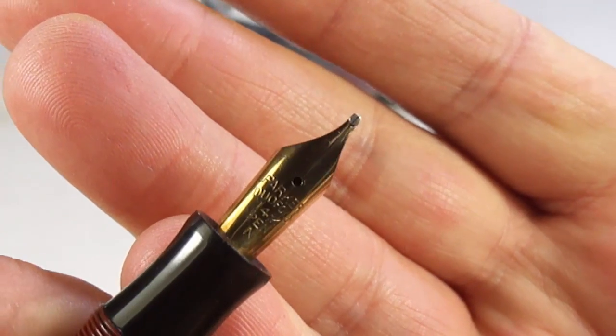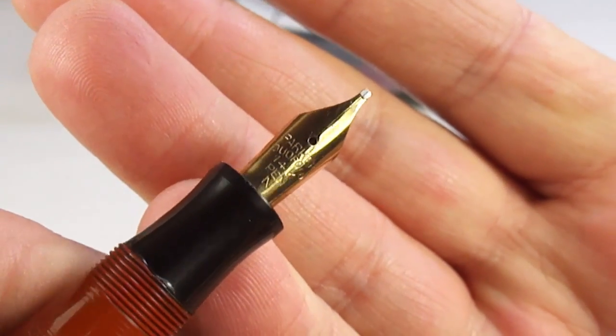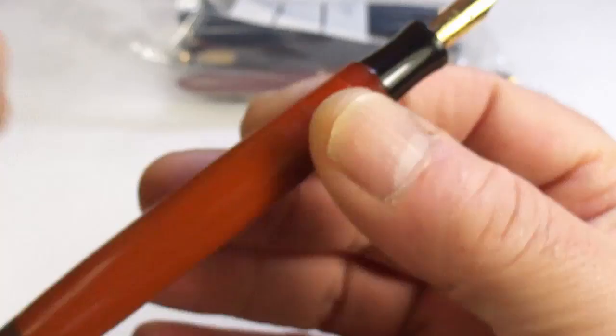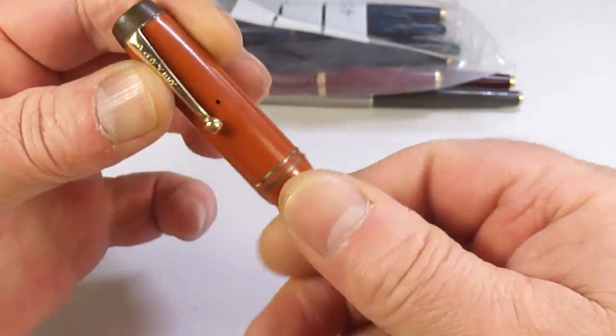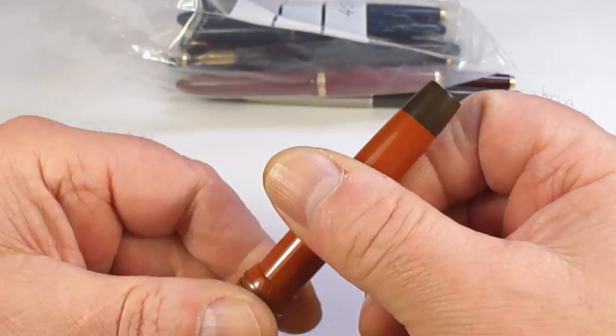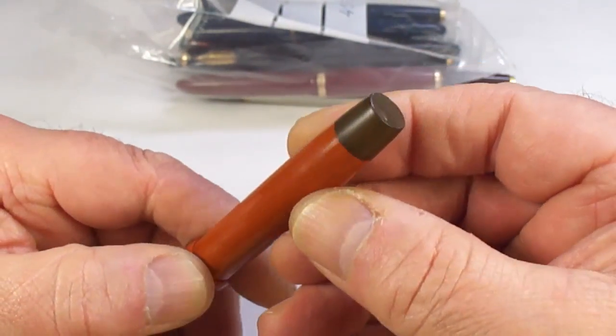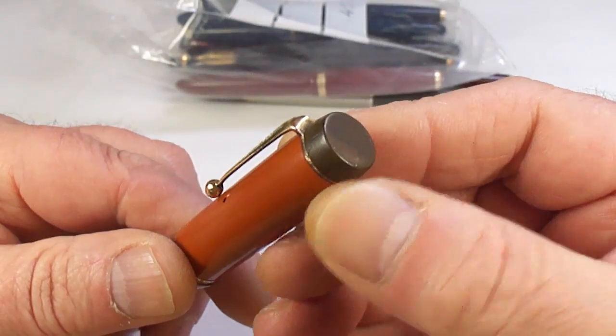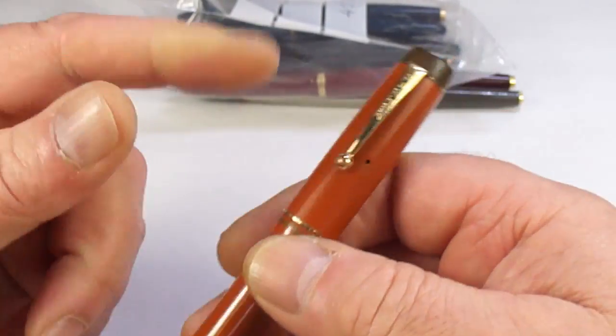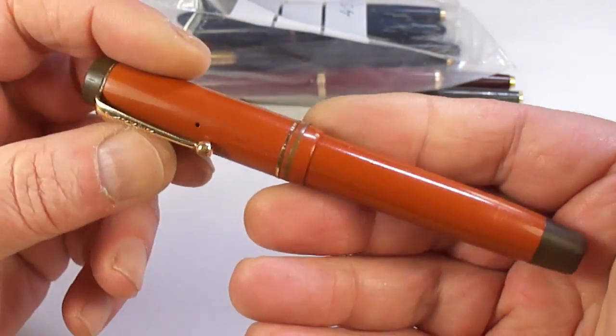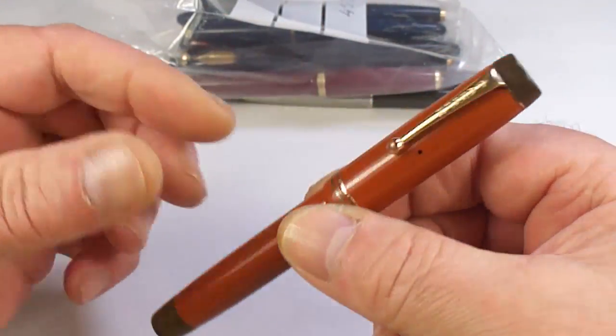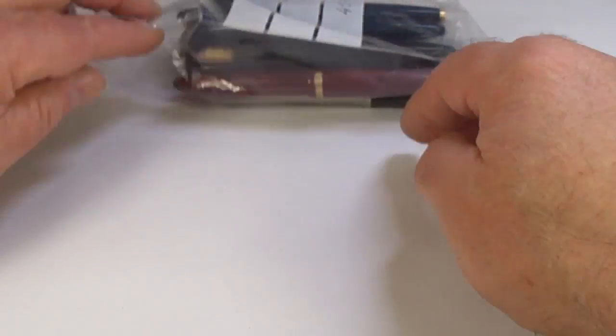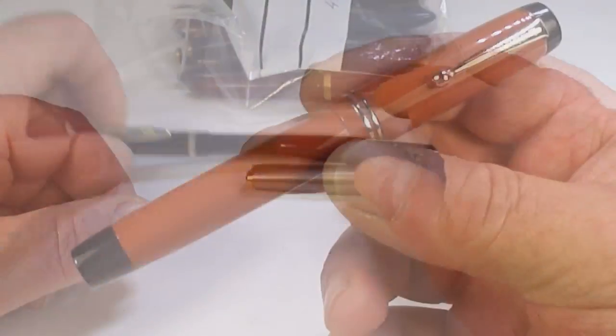One thing I noticed with this one is it's got this broad stub nib as you can see there. A lovely Parker Duofold. We've got discoloring as normal to the blind cap and the finial at the top, but we'll get them lovely and black, give it a polish, new sack, and somebody will enjoy that for many years to come.